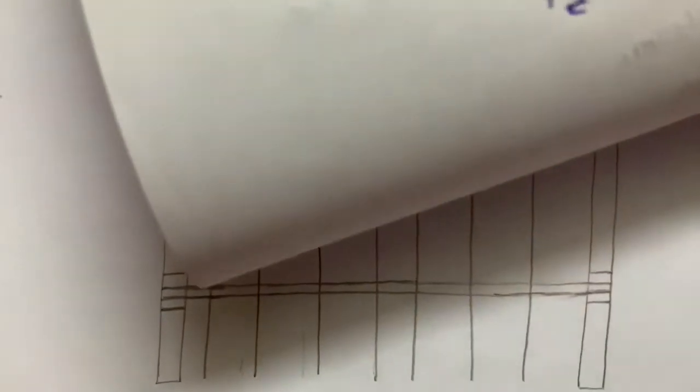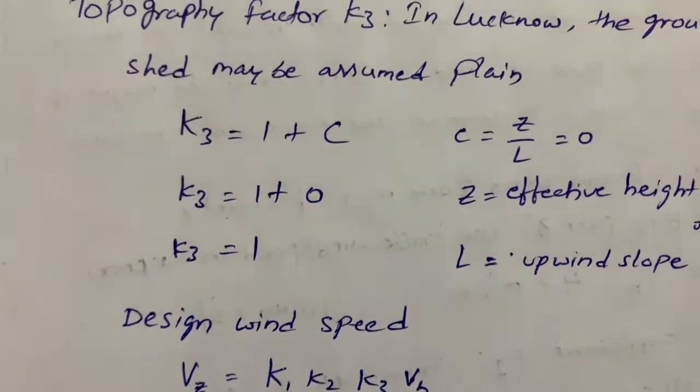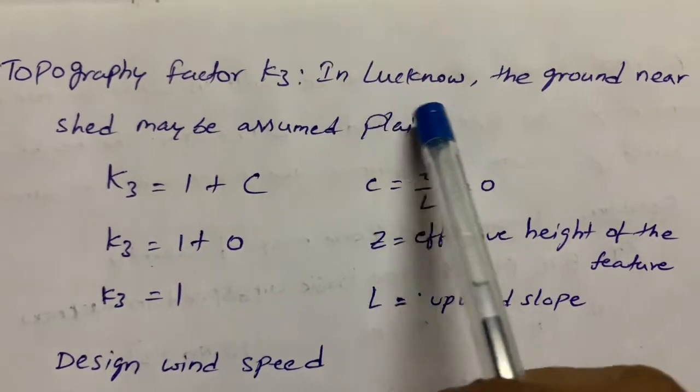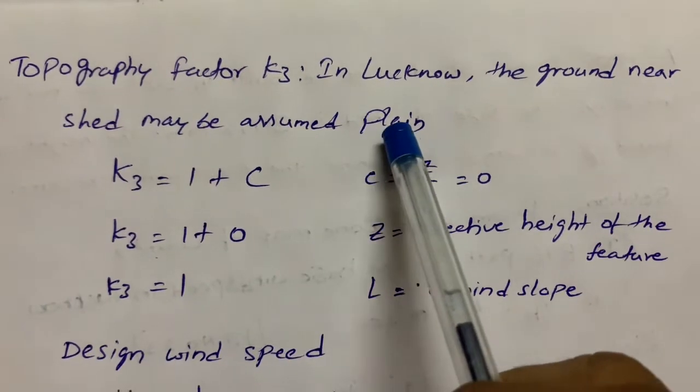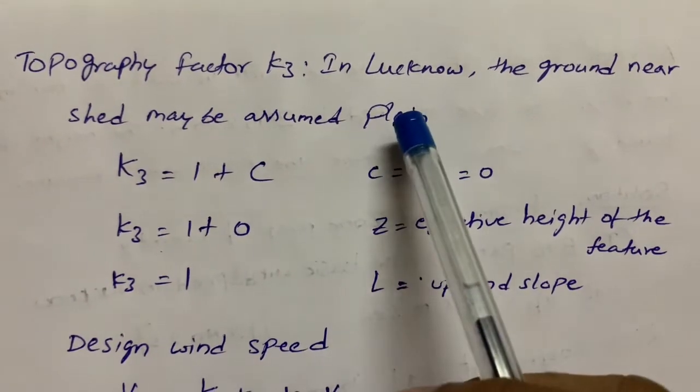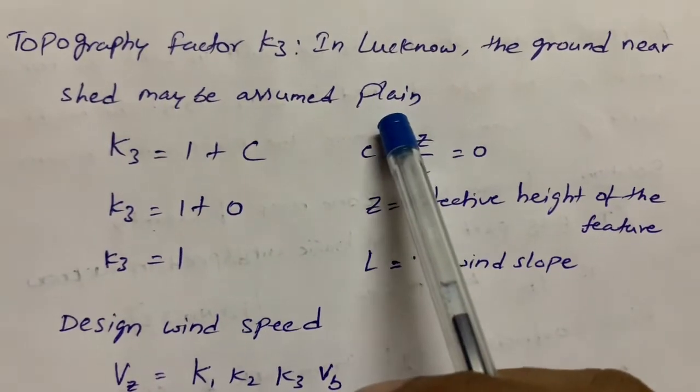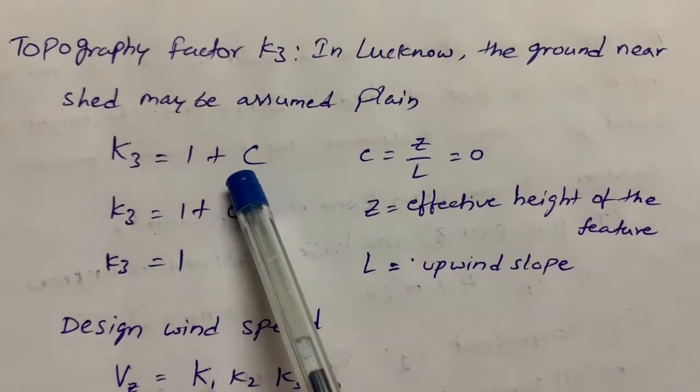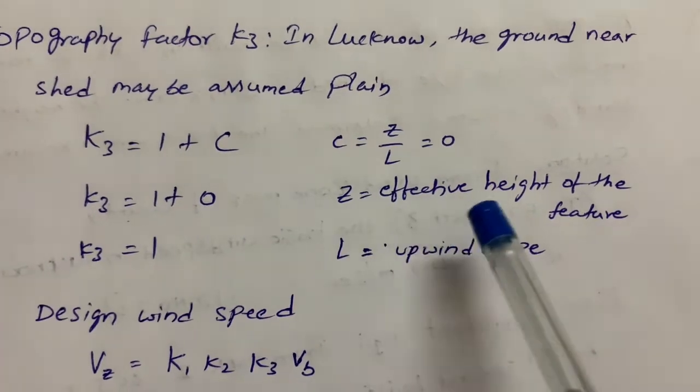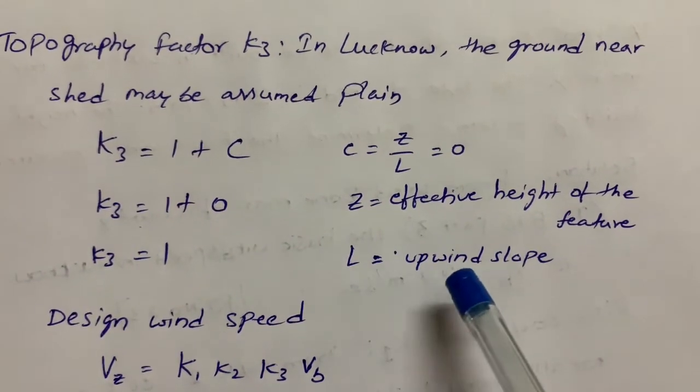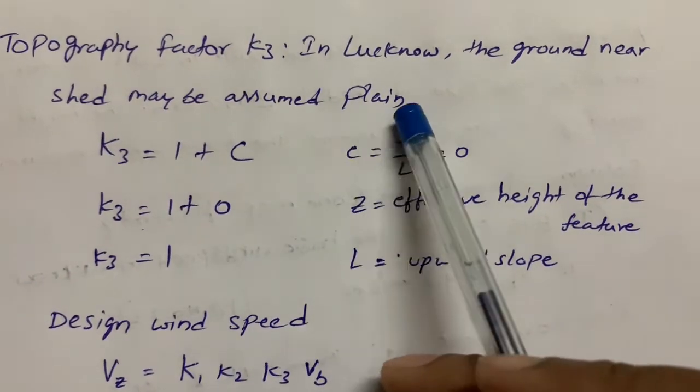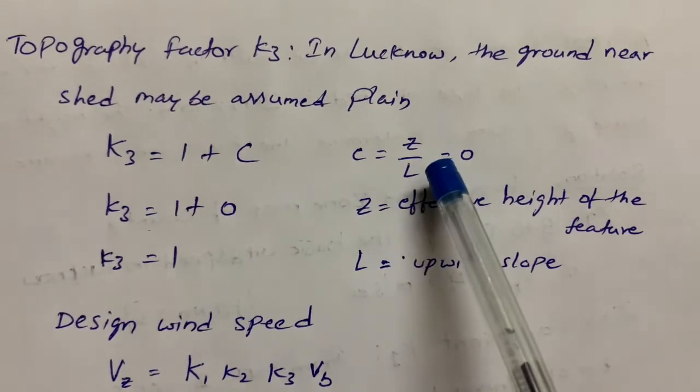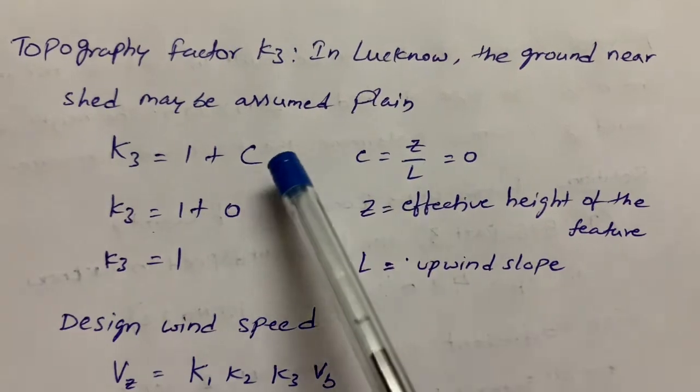Next is topography factor K3. In Lucknow, the ground near shed may be assumed as plain. K3 formula is 1 + C, where C = z/L. z is effective height of the feature and L is upwind slope. Since the ground is plain with no slope, C = 0, so K3 = 1.